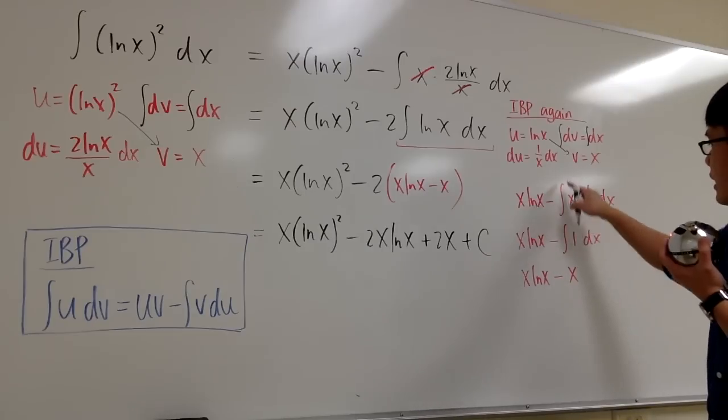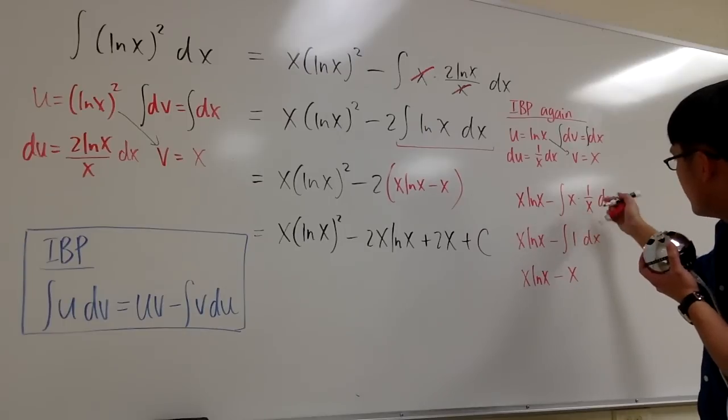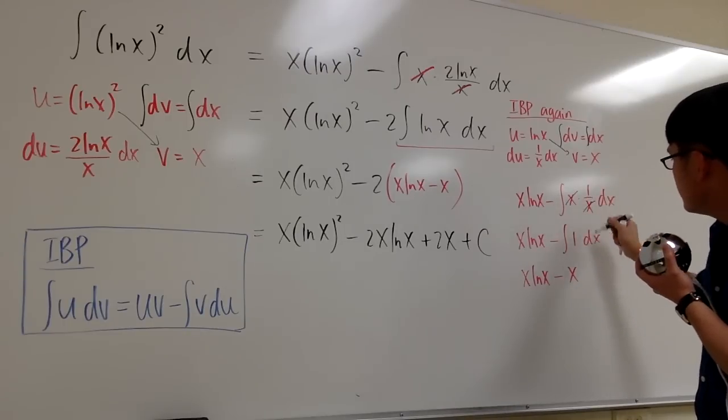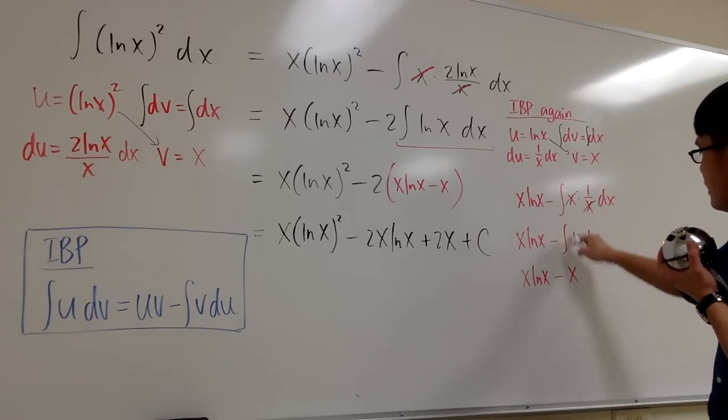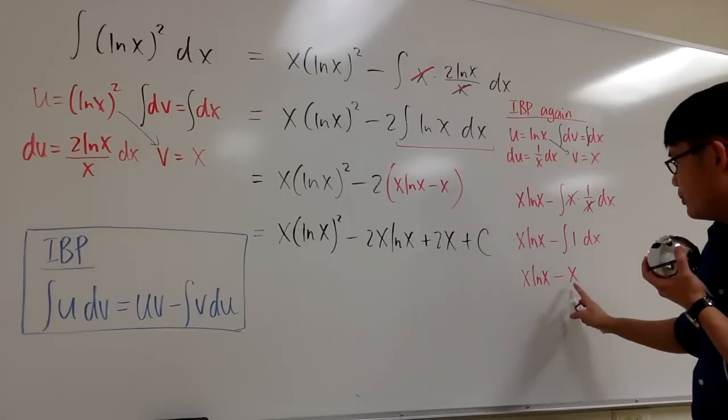So this part is the integral of v du. Here, we have x times 1 over x. So the x, of course, cancel. And we can look at this as the integral of 1 dx. And the integral of 1 dx is just going to be x.